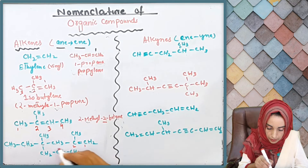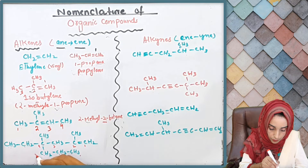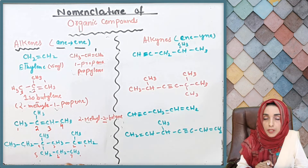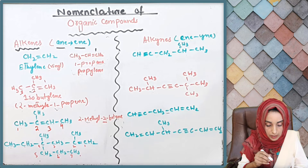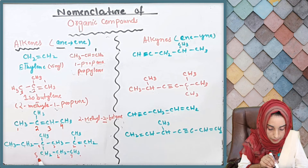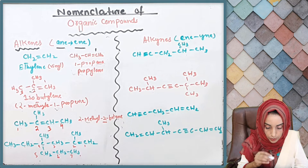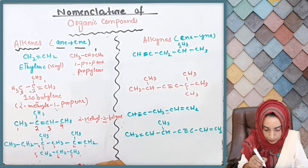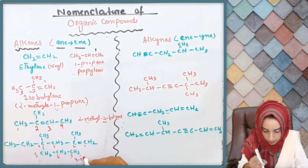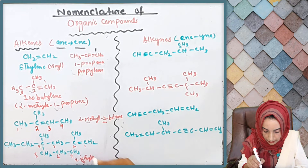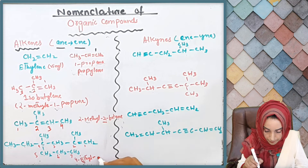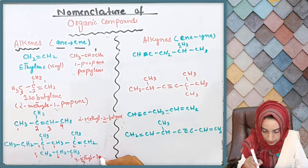The parent chain will be numbered: one, two, three, four, five, six, seven. Now moving to the substituents — at position four we have two substituents: methyl and ethyl, and at position two we also have methyl. Since ethyl comes first alphabetically, we write: 4-ethyl, then hyphen...